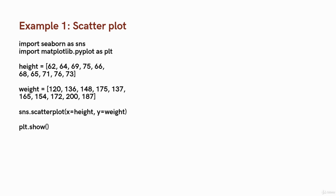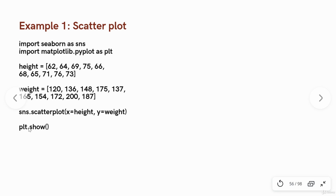Let's take an example and start with the scatter plot. To make a scatter plot you need to make the necessary imports, which include Seaborn and Matplotlib. Let's assume we have a list of height values and a list of weights. To create a scatter plot between x and y, that is heights and weights, you use sns.scatterplot(), where x is equal to height and y is equal to weight, and then finally plt.show().